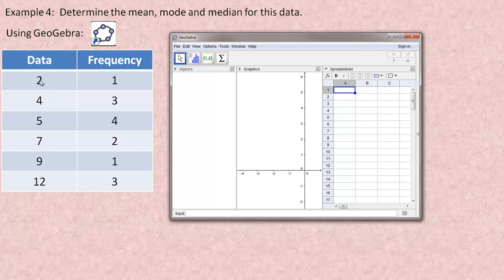The frequency is how many of each of these you have. There's only one 2, three 4s, four 5s, two 7s, one 9, and three 12s. Now, if you wanted to, you could type 2, and then 4, 4, 4 instead of using the frequency. There's four 5s, so you could go 5, 5, 5, 5. But if you have a lot repeated, it's a good idea to use this frequency option.